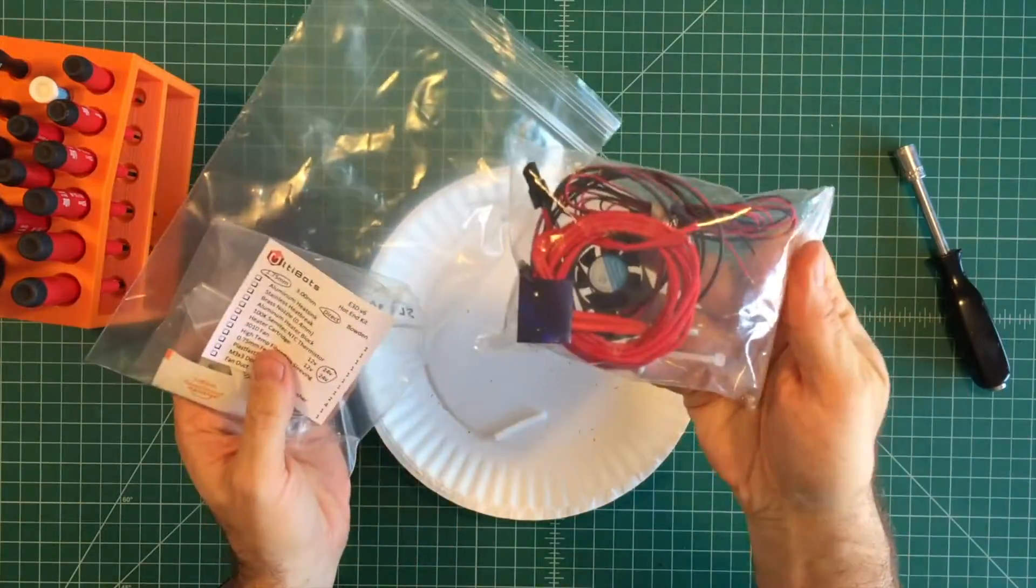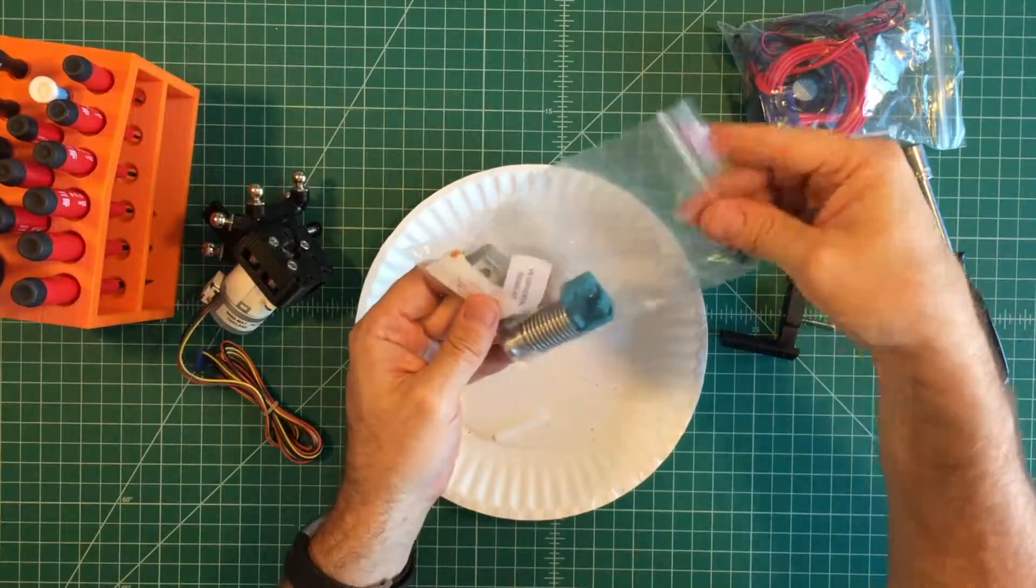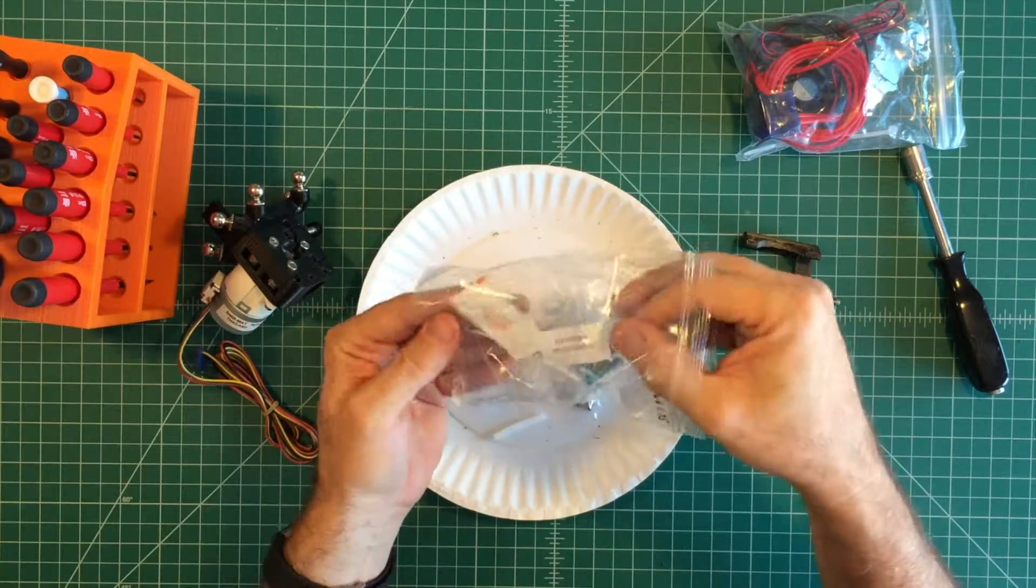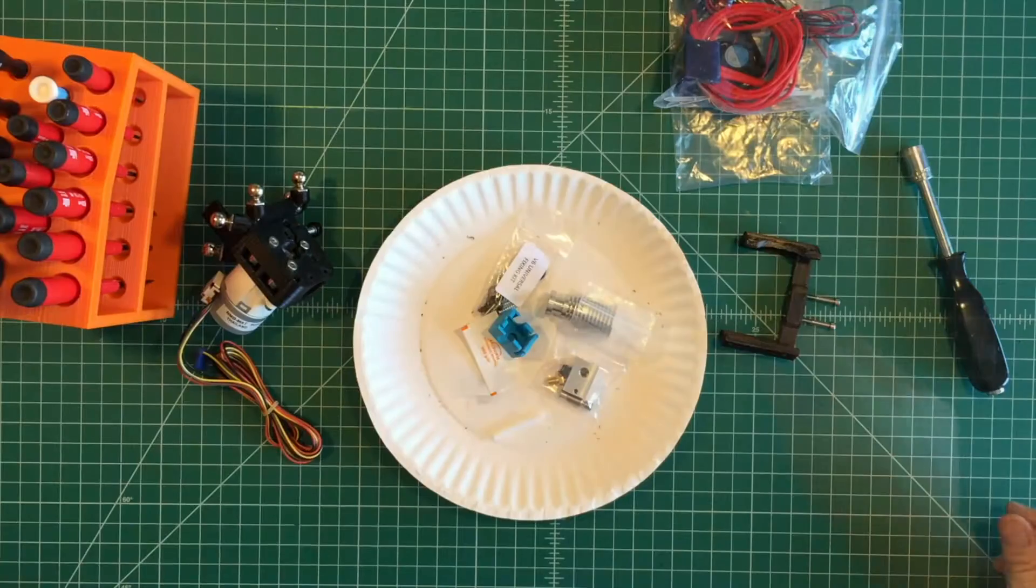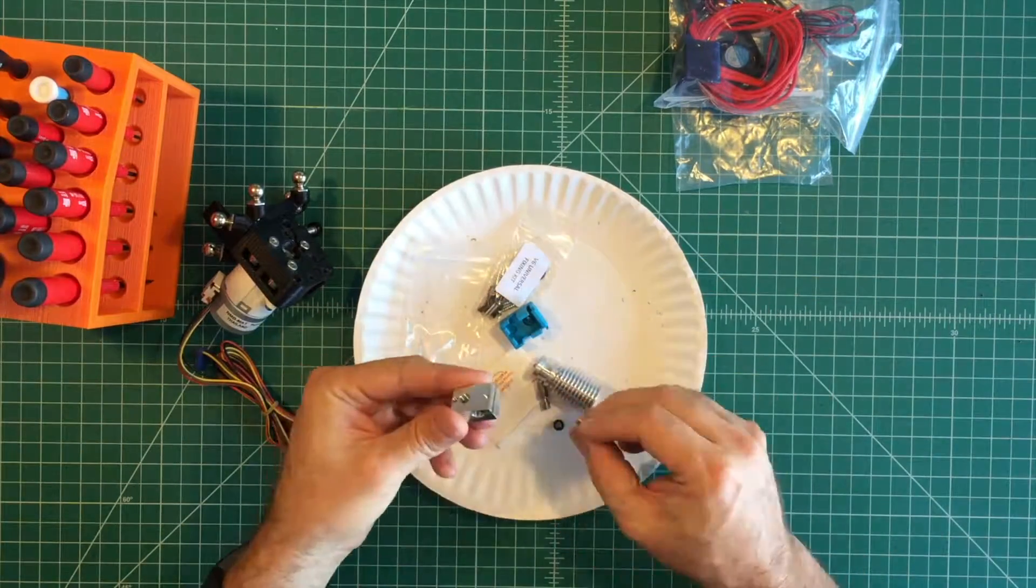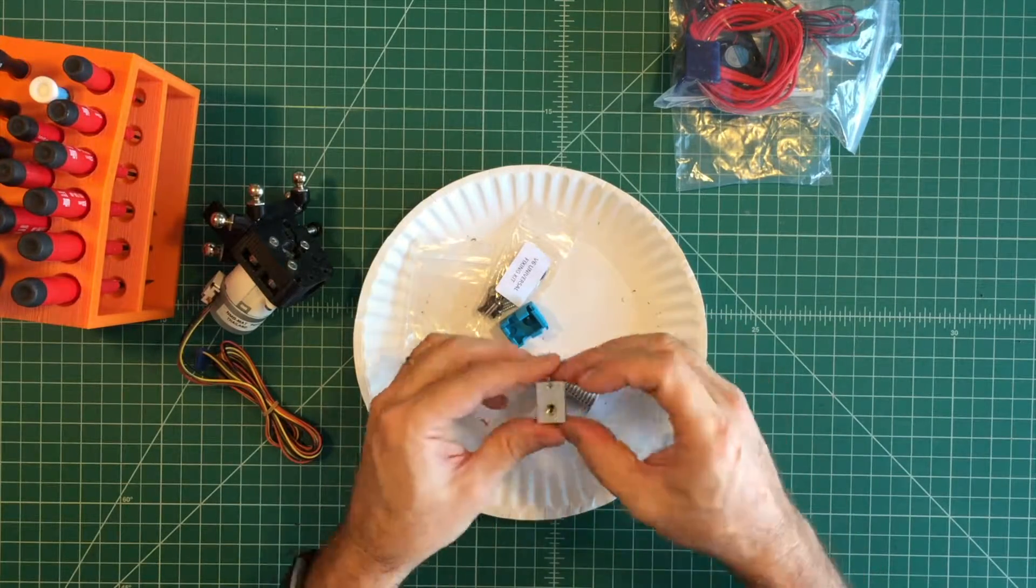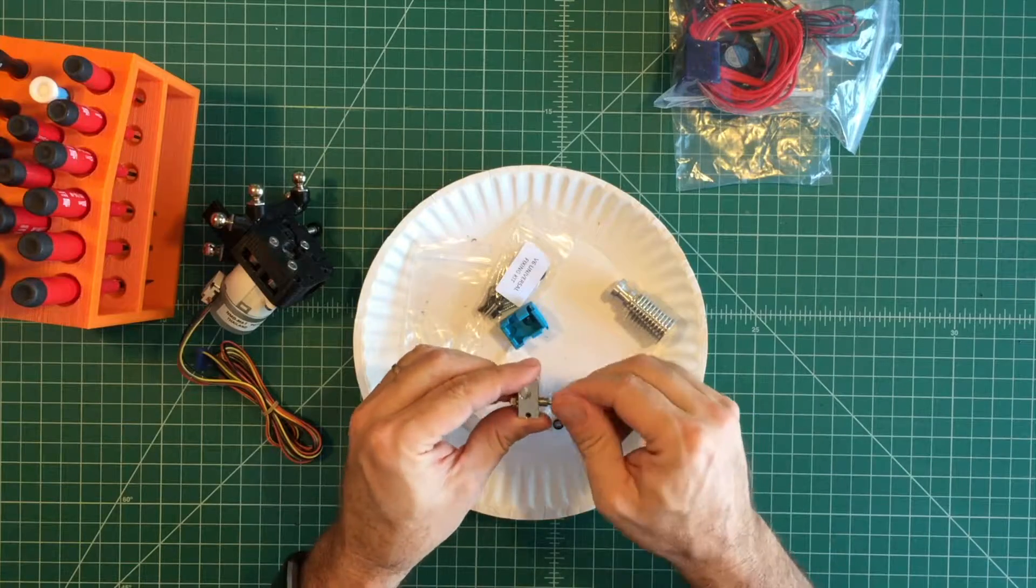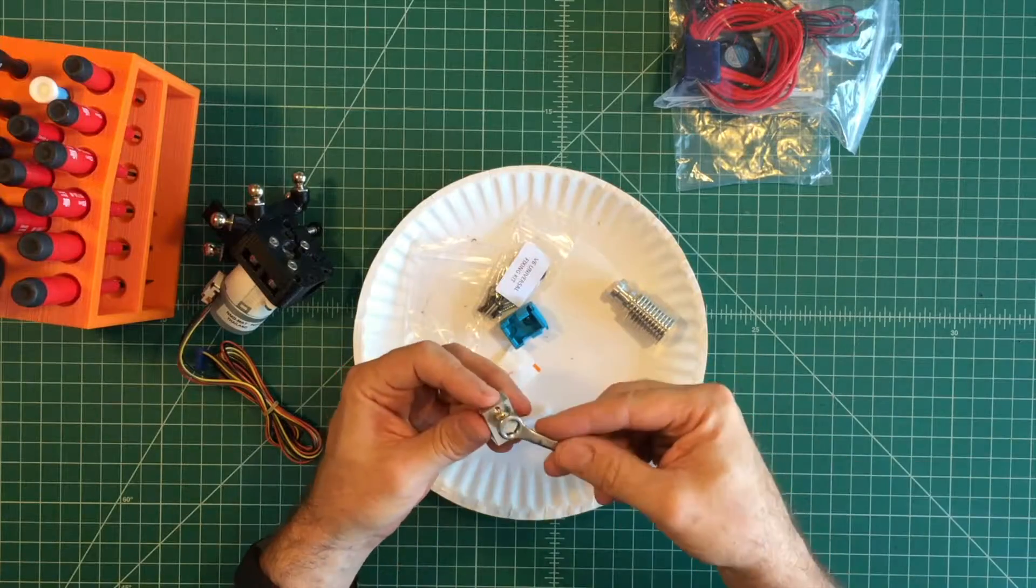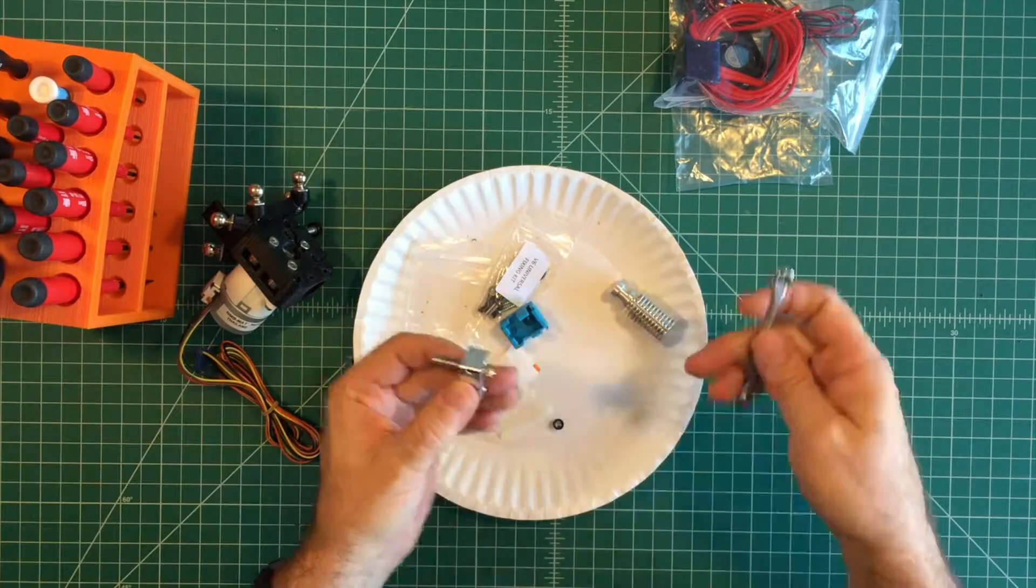Remove the fan and wiring bag from the E3D hotend kit and set it aside. Gather the hotend and hardware for assembly. Locate the thin side of the heater block as shown. Then screw in the brass nozzle leaving three to four threads exposed. Screw in the heat brake on the other side so the threads are flush with the heat block. Then lightly tighten the brass nozzle with an M8 wrench.